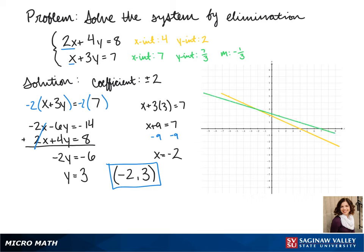Now we connect our points, and that's our line. We can see that where our lines cross is at negative 2, 3.